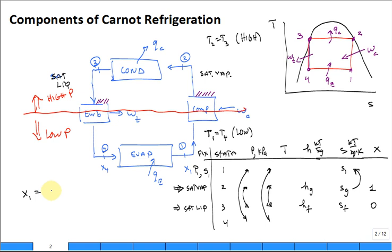How does that help us get the quality X1? Well, quality is going to be S1 minus SF at that lower pressure in the evaporator, divided by Sg minus SF. Notice those saturated liquid, saturated vapor entropies are for state one's pressure, the pressure in the evaporator. They're not equal to this Sg right here. That Sg is for the high pressure.